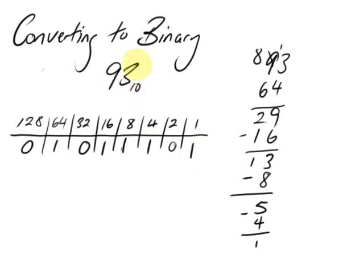So 93 in base 10 is the same as 0, 1, 0, 1, 1, 1, 0, 1 in binary.